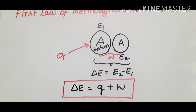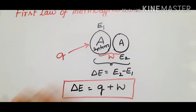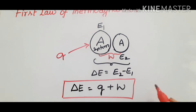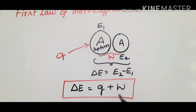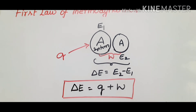The energy change of a system is equal to the heat absorbed or given, plus the work done. Work done by the system is negative; work done on the system by surroundings is positive. In general, the statement is: delta E equals Q plus W.